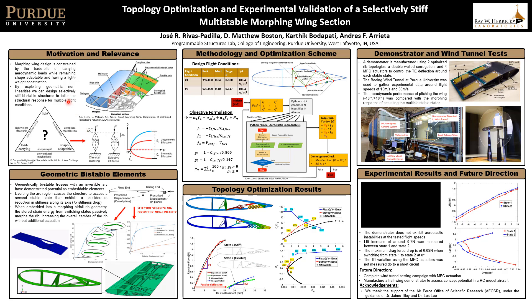Morphing wing design is constrained by the trade-offs of carrying aerodynamic loads while remaining shape-adaptable and having a lightweight construction. We can bridge the gap between these trade-offs by introducing the concept of selective stiffness. If we think of selective stiffness in terms of the classical buckling beam problem, once we reach a critical load, we enter the nonlinear post-buckling regime, where we traditionally would observe a symmetric bifurcation.